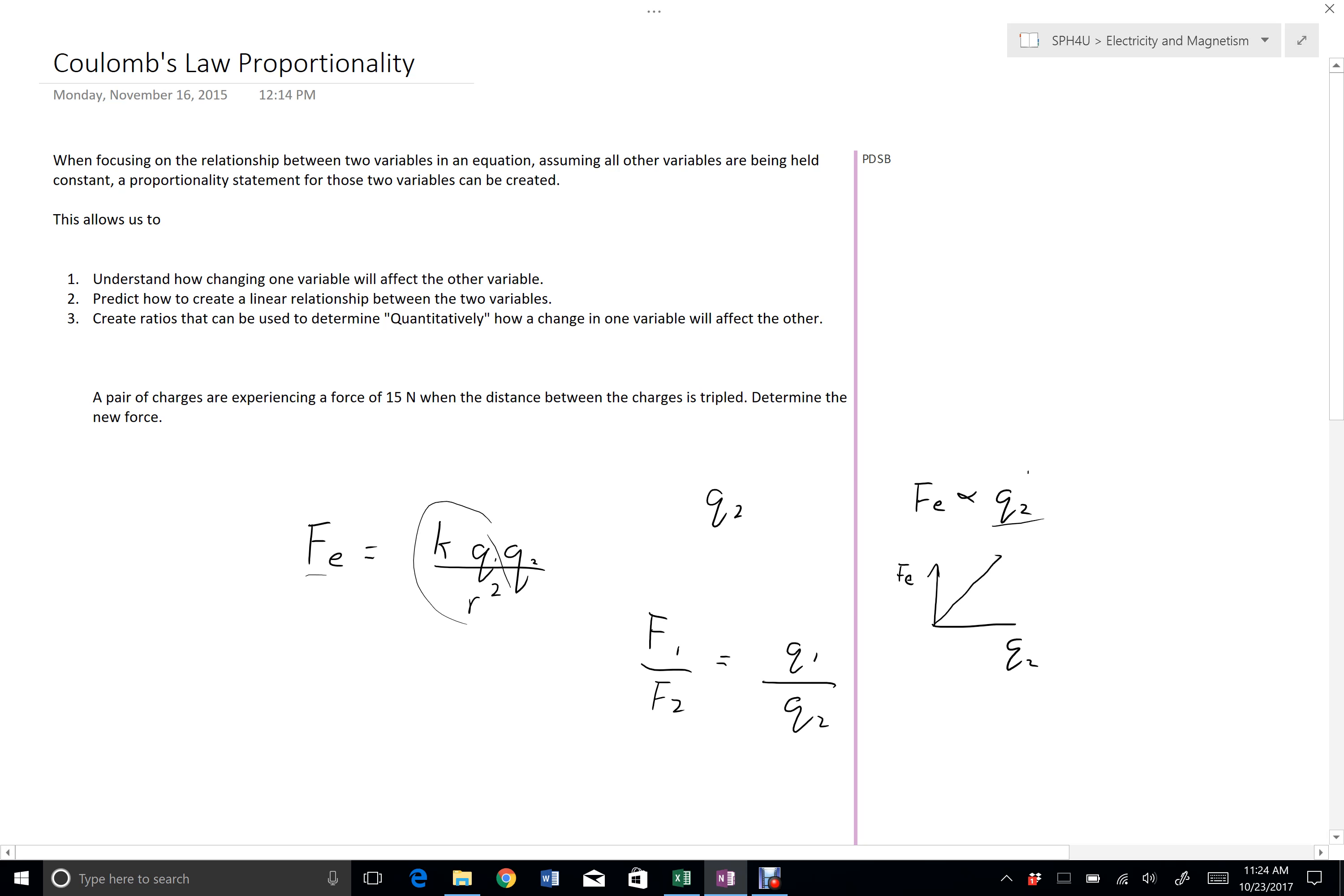But let's take a look at what that looks like if we have the relationship between force and r squared here. So let's say we're interested in these two variables. We're going to assume that the charges involved in this force are remaining the same, and we're going to use this proportionality statement to examine how the radius or the distance between, the separation distance between the charges can affect the overall force that they're experiencing.